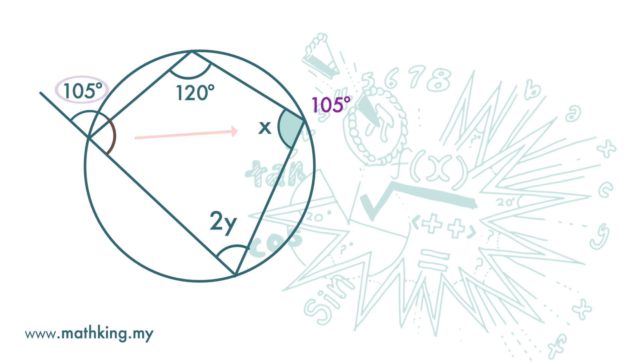Next, let's find Y. 2Y and 120 degrees are interior opposite angles. When we add them up, we get 180 degrees. So 2Y is 180 minus 120. Y is 60 over 2, and Y is 30 degrees.